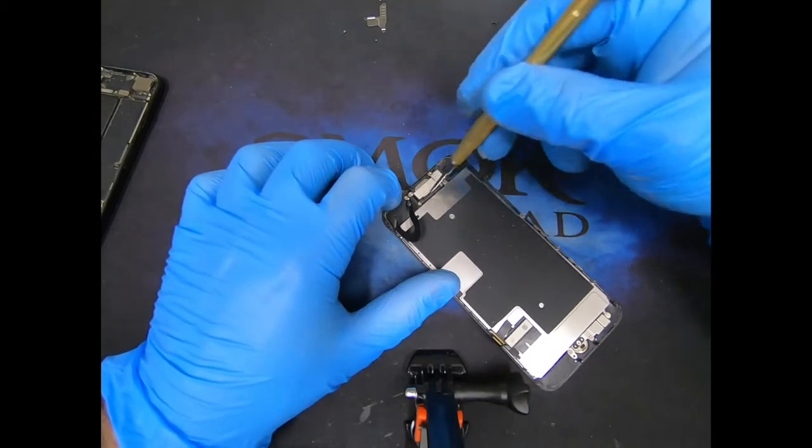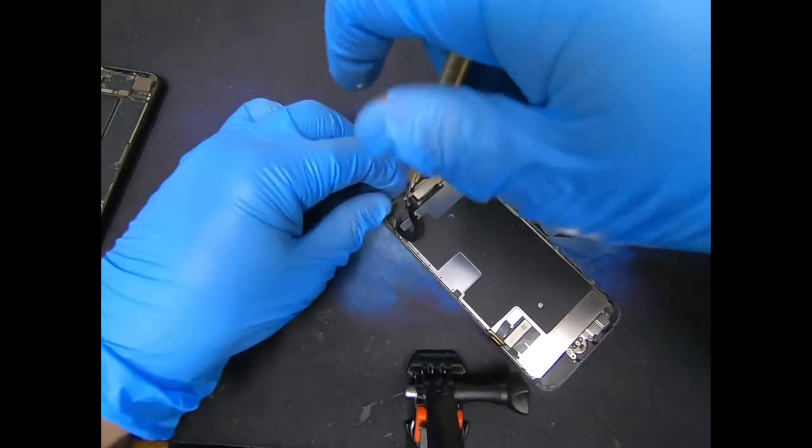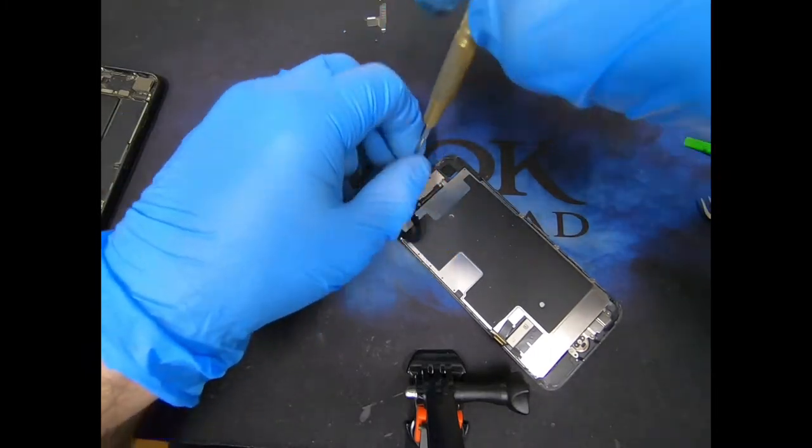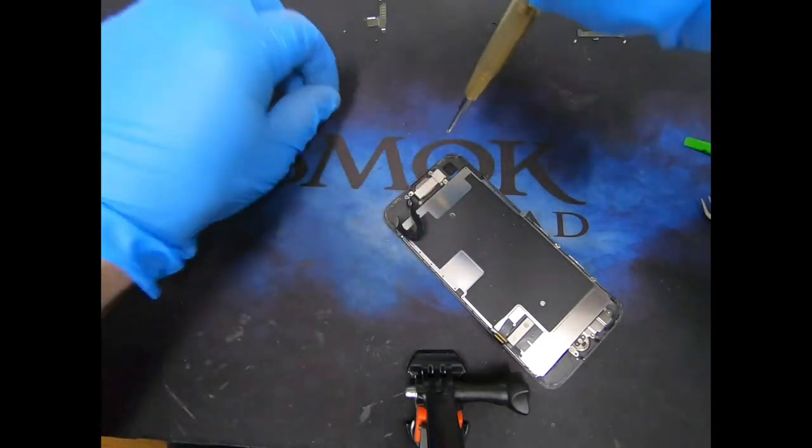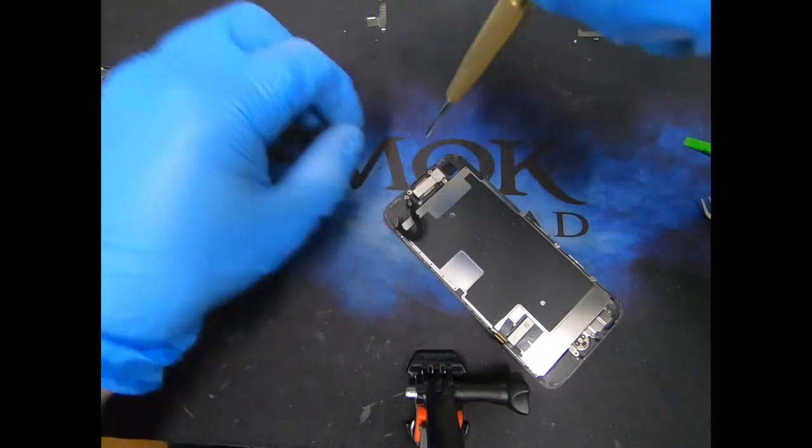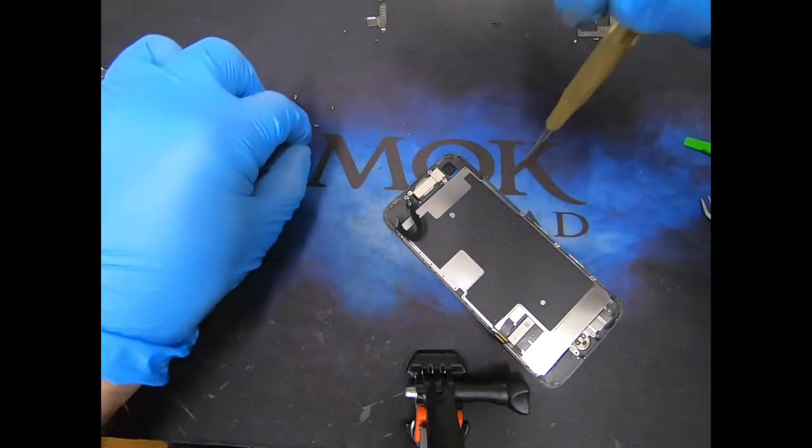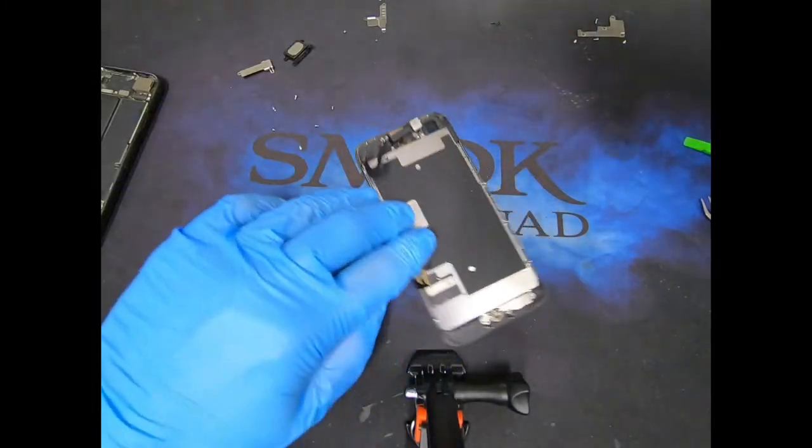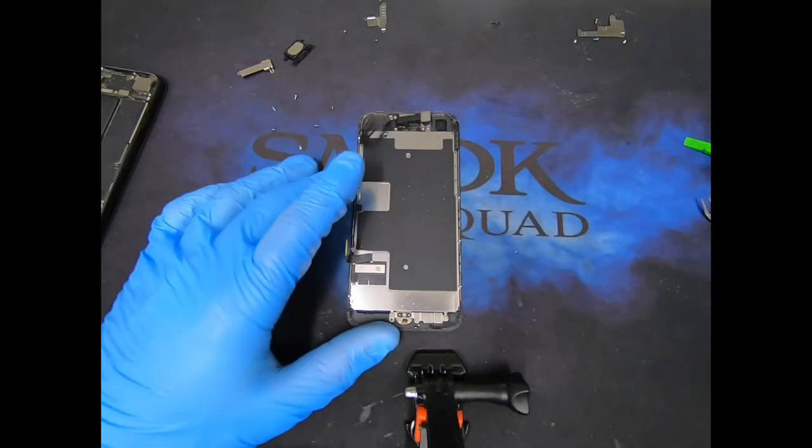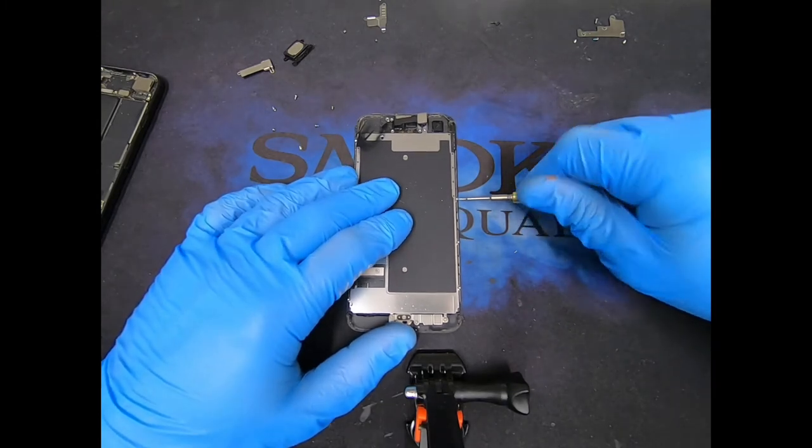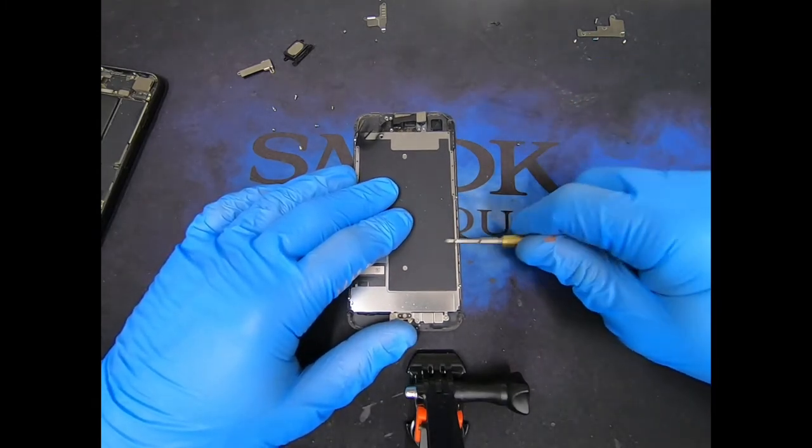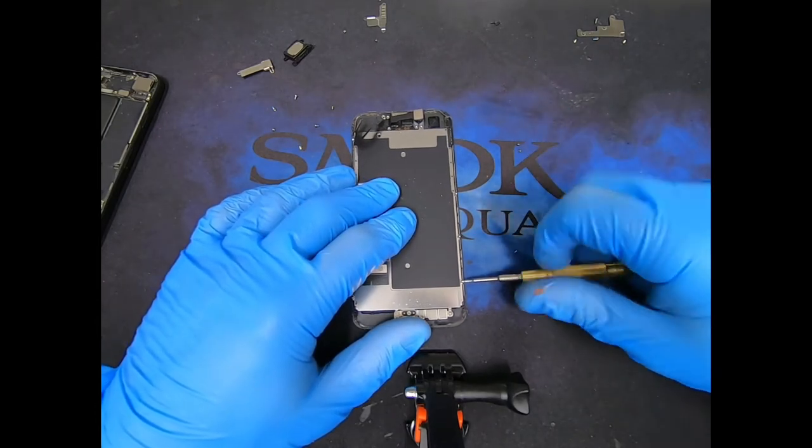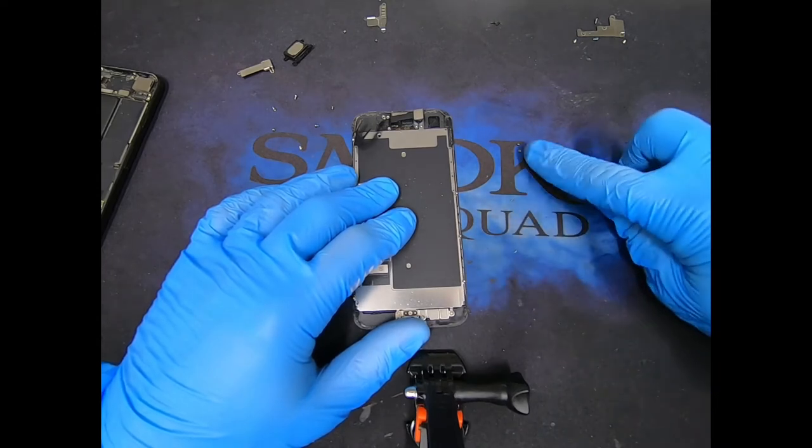First thing we're going to do is remove the earpiece speaker bracket. We're going to remove three screws from this side and three on this side. Those are all the same size. You don't have to worry about putting them in order. These are tri-point screws. I will have a link in the description for all the tools and parts we used.